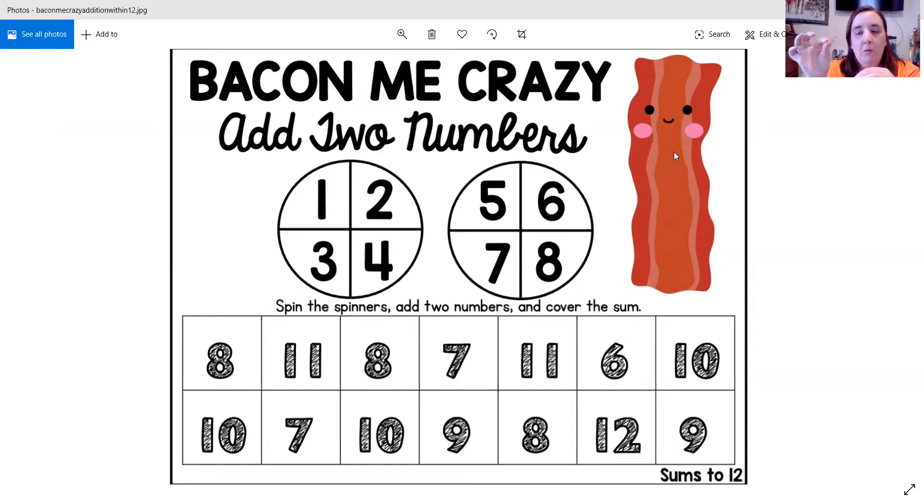With the pencil and the paper clip, that's going to be your spinners. The directions even tell you, it says add two numbers, spin the spinners, add the numbers and cover the sum.